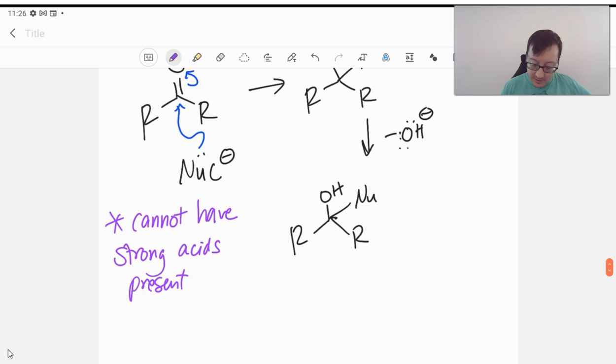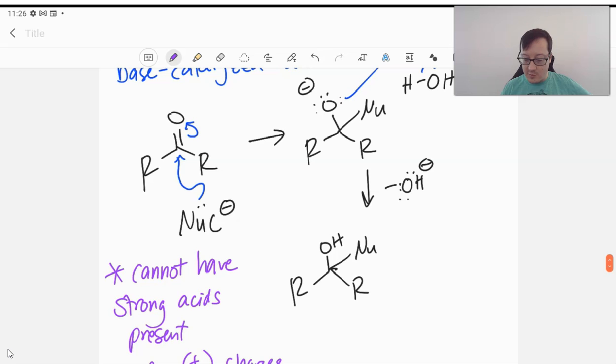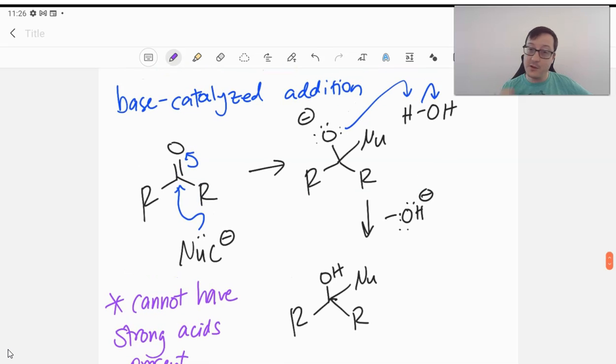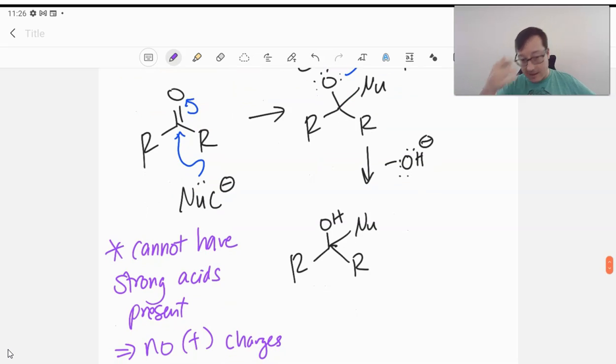So that generally means that we're not going to be generating positive charges throughout our mechanism. So notice in all these we have a negative thing adding on to our neutral molecule. Our neutral molecule therefore becomes negative. We attack another neutral molecule, producing a negative molecule and a new neutral molecule. So everything's either negative or neutral in a base-catalyzed mechanism. Generally speaking, that means we do not see positive charges here.